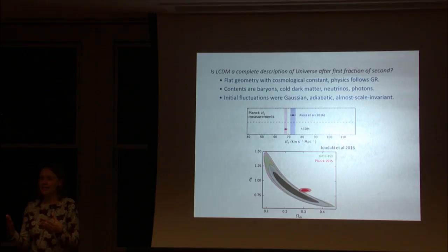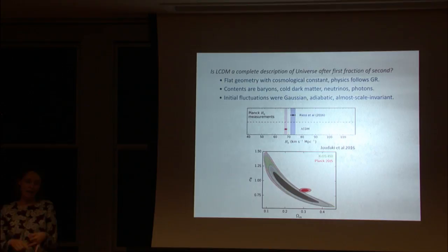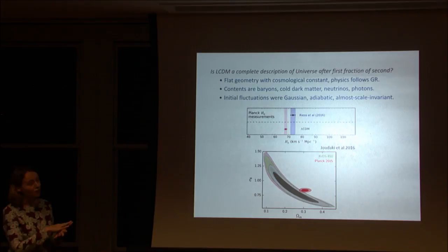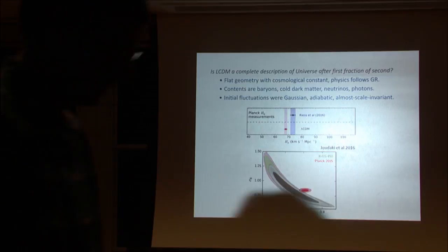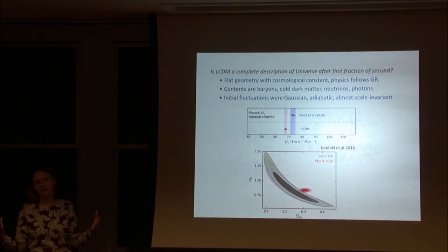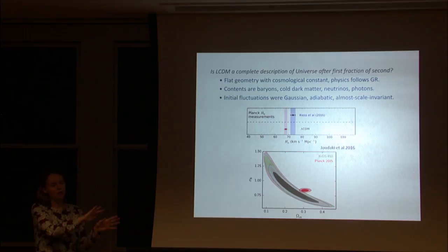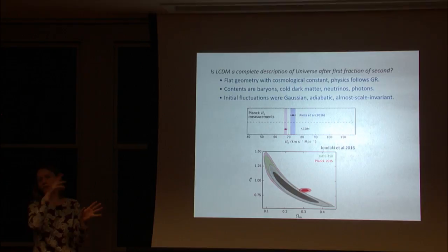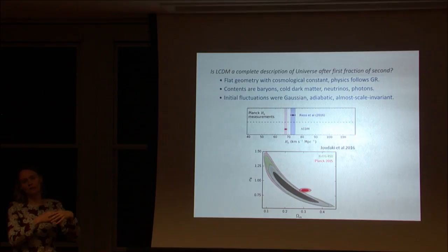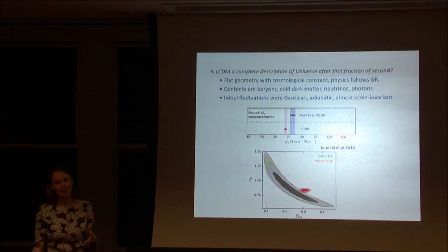Lambda CDM is a model where the universe is geometrically flat, has a cosmological constant, and the physics is described by general relativity. The contents are purely baryons, cold dark matter, neutrinos, and photons. The initial fluctuations are Gaussian, adiabatic — meaning fluctuations were put in equally across all particle species — and almost scale invariant, meaning you have the same size features on large and small scales.